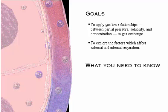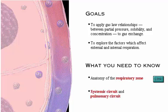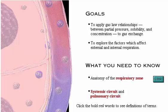Here's what you need to know: the anatomy of the respiratory zone, and the systemic and pulmonary circuits. To review the anatomy of the respiratory zone, click the link button. You can return to the page you started from by clicking the return button. To see definitions of terms, click the bold red words.